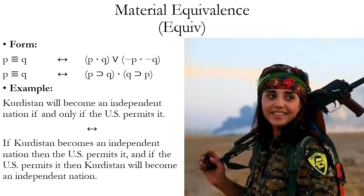Material equivalence allows you to convert from a triple bar or logical equivalence to either a wedge of conjunctions or a dot of conditionals. There are two versions of this rule. And remember, as with the other rules, the double arrow means you can go in either direction — it also allows you to build up a triple bar proposition if you have a wedge or a dot that matches the other operators.